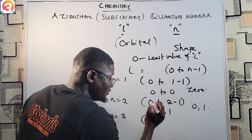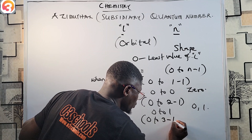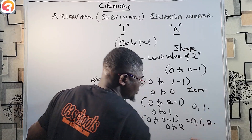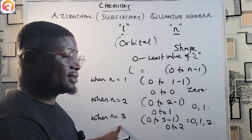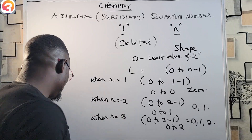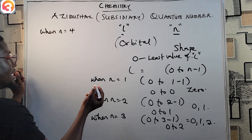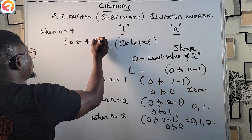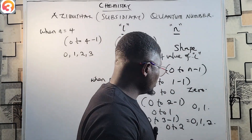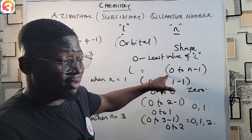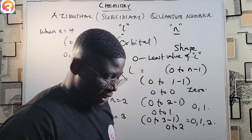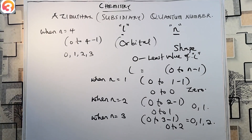When n equals 3, the range of values of l is from 0 to 3 minus 1, which is 0 to 2 — so l has values 0, 1, and 2. When n equals 4, l ranges from 0 to 4 minus 1, giving values 0, 1, 2, and 3. So the values of l are dependent on those of n.